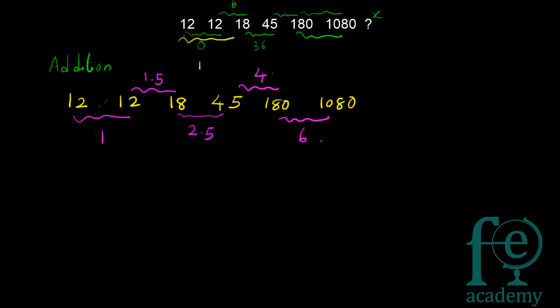The difference between the first and second multiplicand (1 and 1.5) is 0.5. The difference between 1.5 and 2.5 is 1. The difference between 2.5 and 4 is 1.5. The difference between 4 and 6 is 2. So the differences between consecutive multiplicands are themselves forming a pattern: 0.5, 1, 1.5, 2.